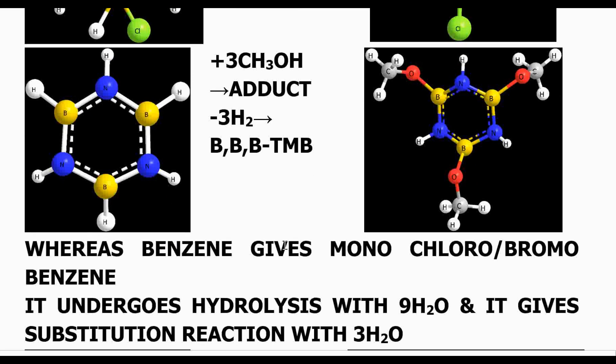Now let us take a look at similar treatment given to benzene. Instead of borazine, if we take benzene and try to carry out these reactions, you will see that the product will be either chlorobenzene or bromobenzene — a monochlorinated or monobrominated product. Here with borazine you get a trisubstituted product. So that is a difference between borazine and benzene in terms of chemical reactivity.